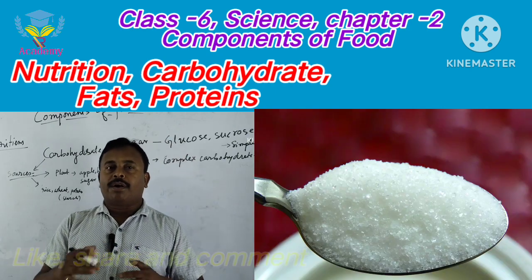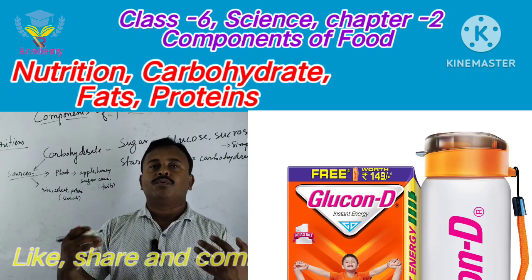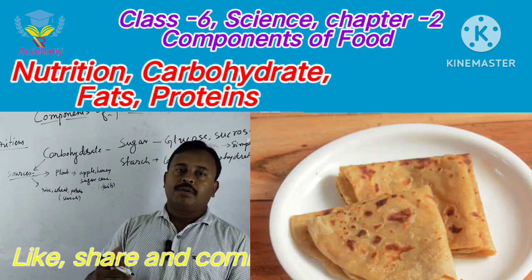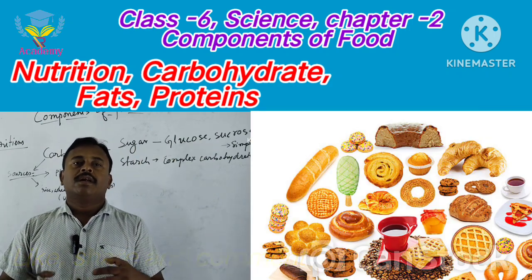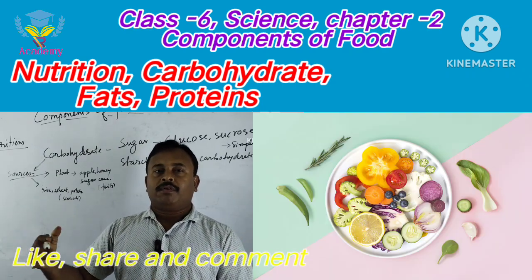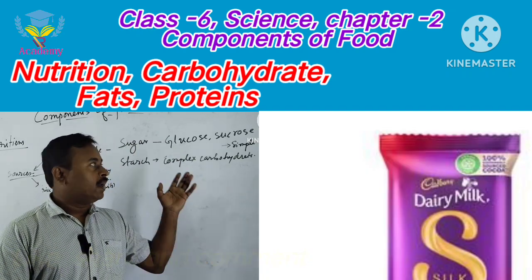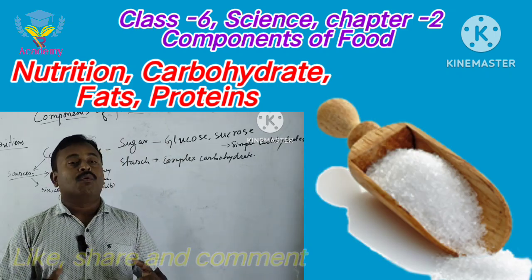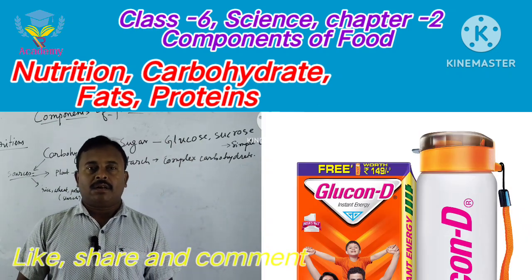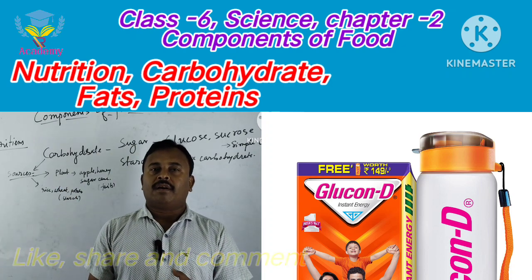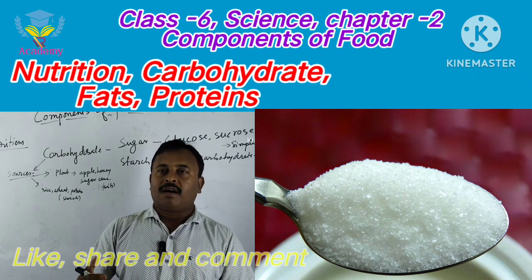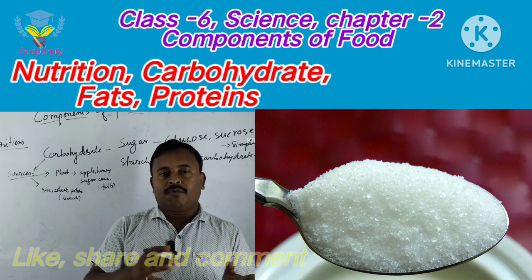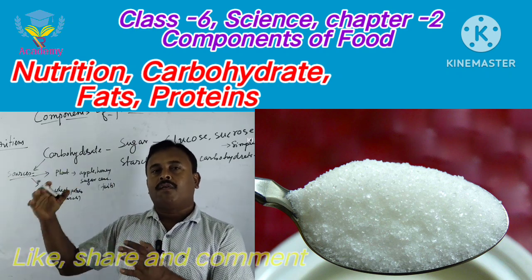Simple carbohydrates are very easy to use by our body. Complex carbohydrates need to be digested and converted into sugar to get energy, and that takes a long time but gives energy for a long time. For instant energy we can take simple carbohydrates like sugar or glucose. But we are not taking food just for instant energy — we take our food after a certain interval of time.